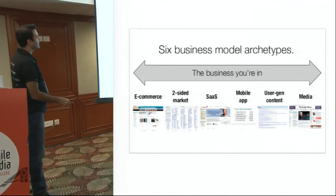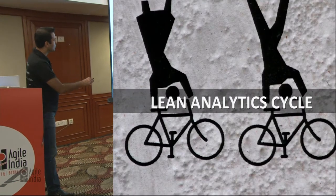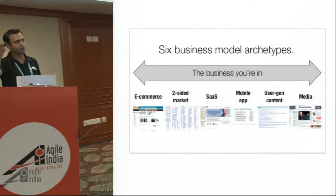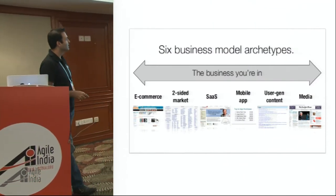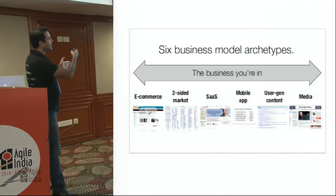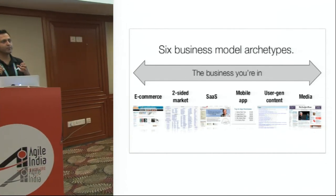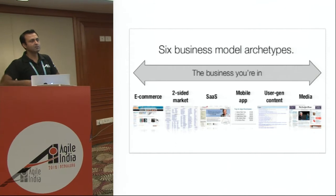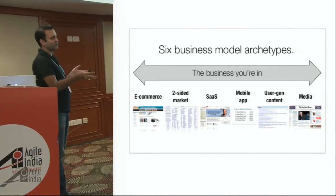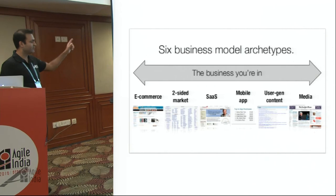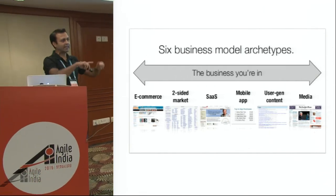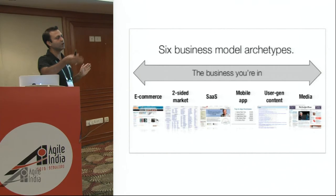Then you have user-generated content. Once you've figured out which model you are, a lot of times these models will overlap — you might be a mobile SaaS company. If you read the book I'm recommending, it has a clear flowchart for each of these models so you'll be able to relate exactly how to go about it.